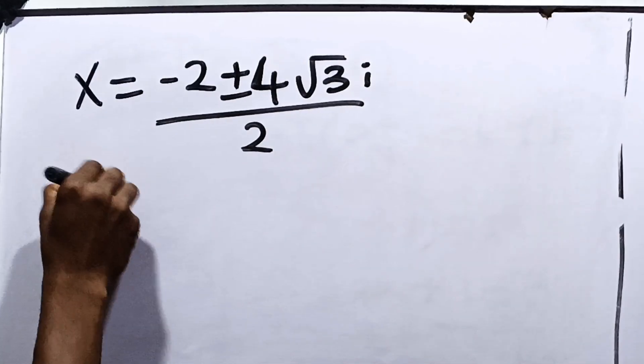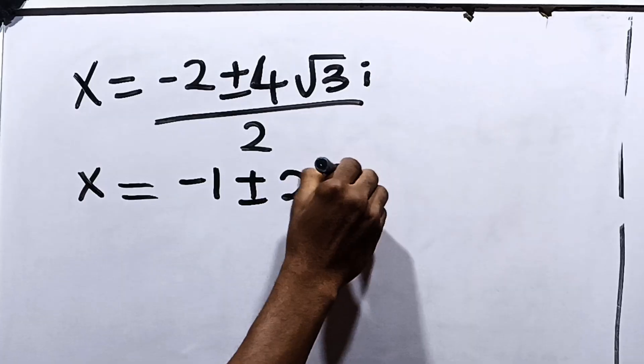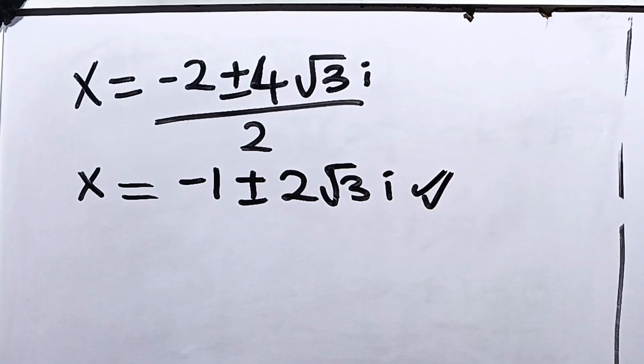Moving on from here, we now have our x here is equal to minus 1 plus or minus 2 root 3i. And this becomes the final answer to this question.